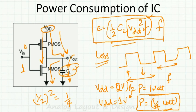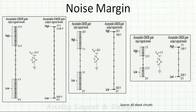That's why VDD has always been reducing. Earlier we saw 5V, then 3.3V, then 1.8V, and nowadays 1V, 0.8V, even 0.6V. The main reason for scaling down the power supply is to save a lot of power.